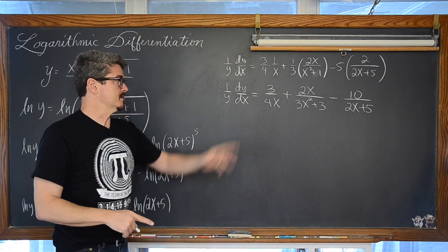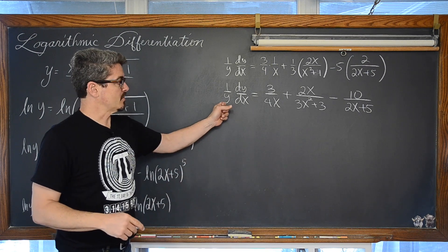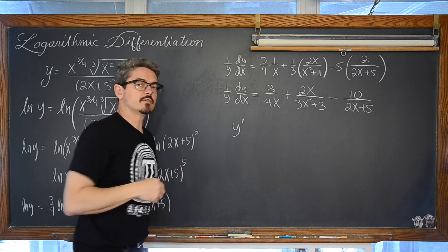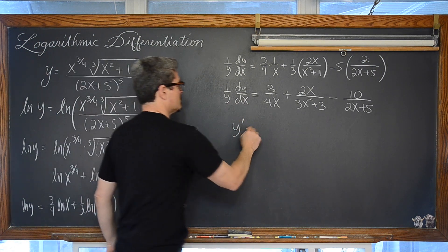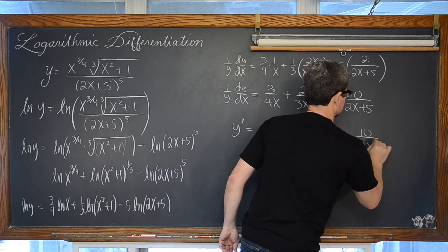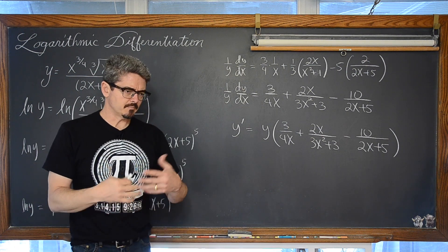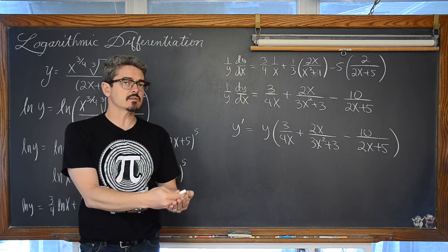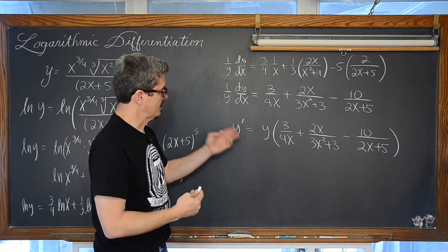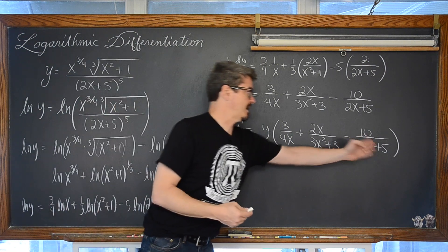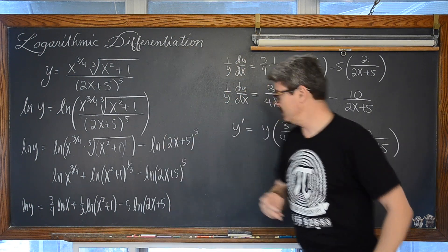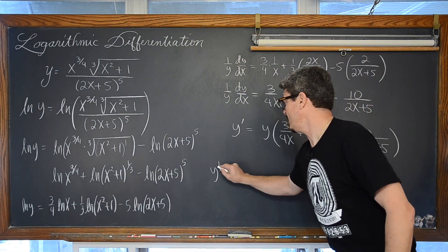But now, to find out what y prime is, or dy/dx, we just simply have to multiply both sides of the equation by y. So y prime, another version of writing our derivative y with respect to x, is equal to y times all of this. Now, just think of like when you are doing implicit differentiation, you are not allowed to write a second derivative with a first derivative in the expression. So I don't really want a y prime or dy/dx in terms of x and y. So we are just going to come up here and find that original expression for y and substitute it in and we are going to be done.